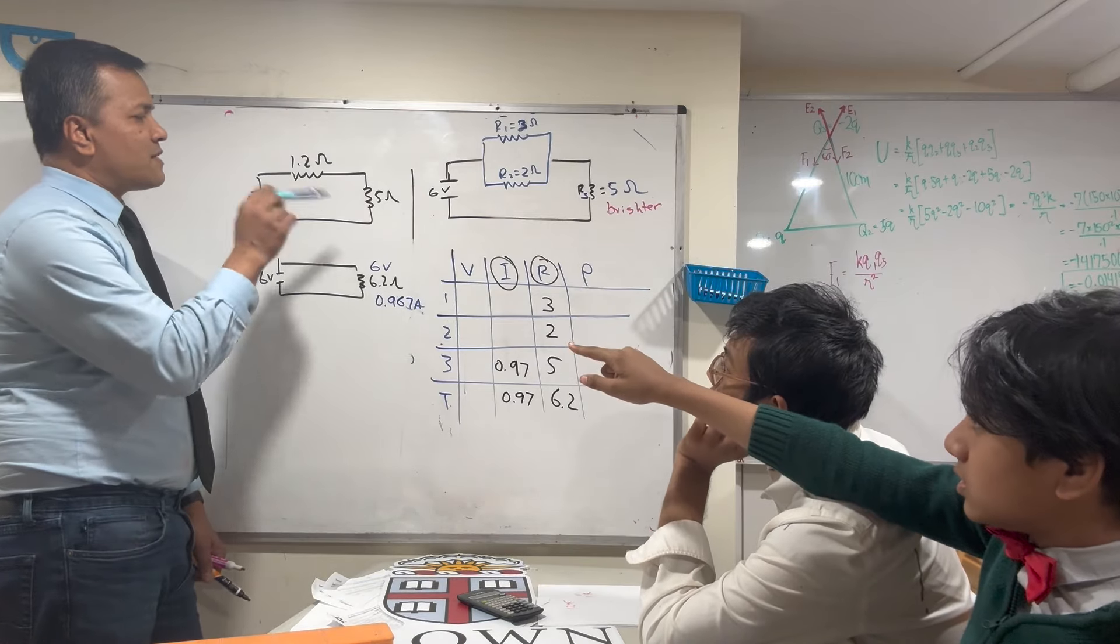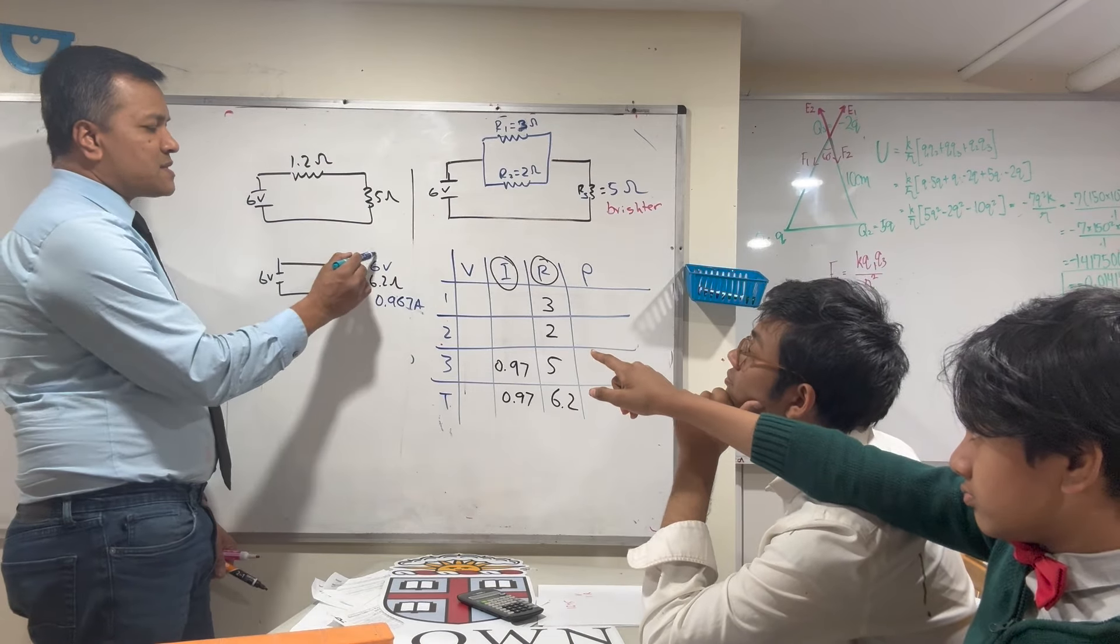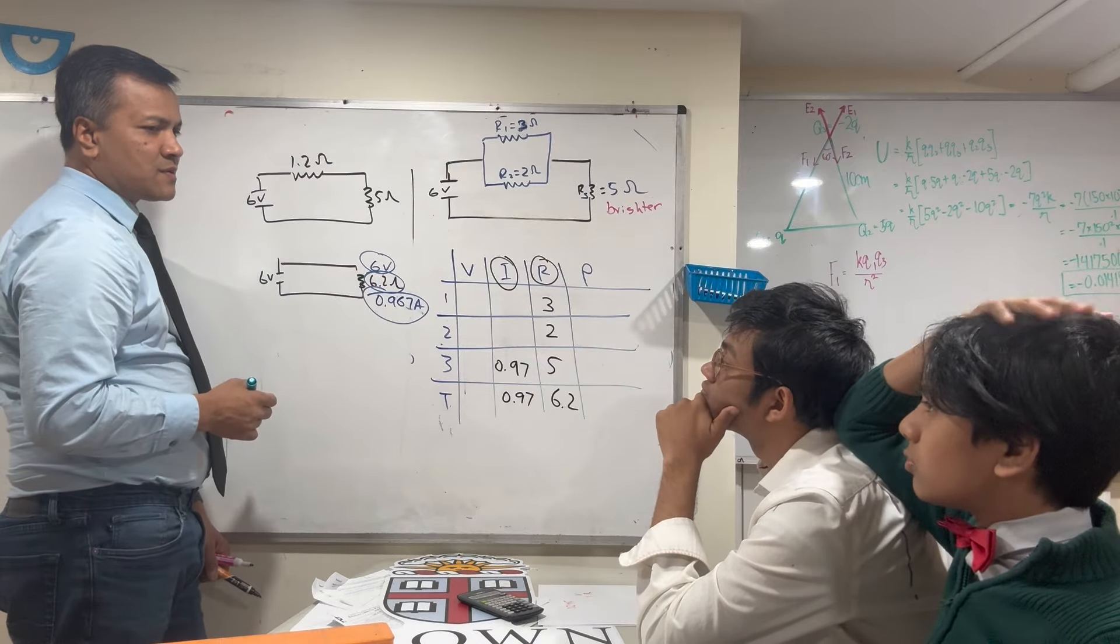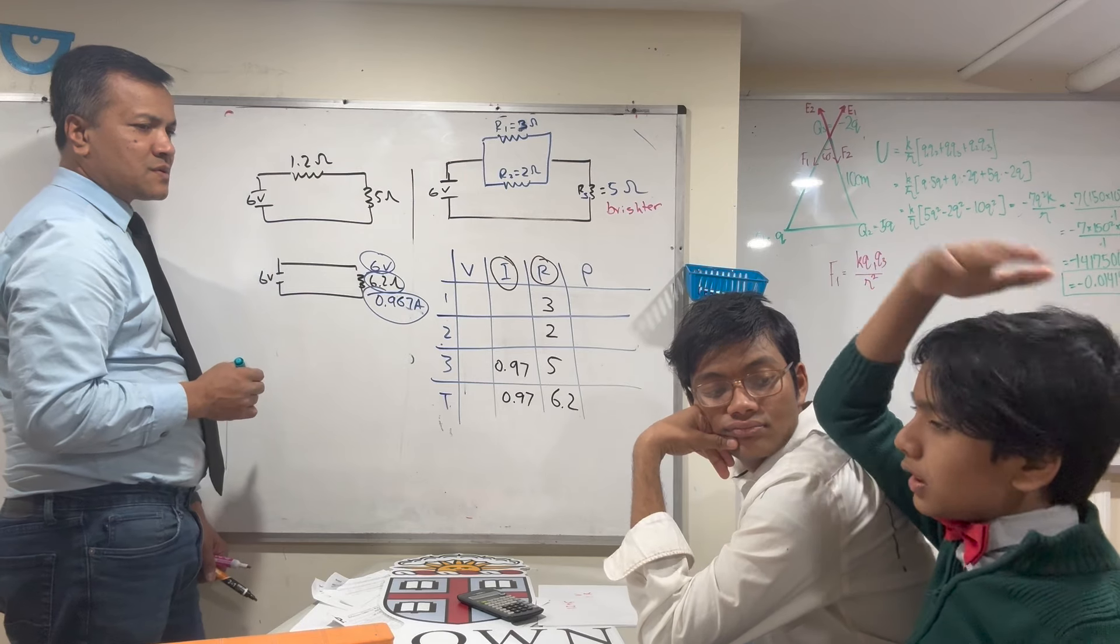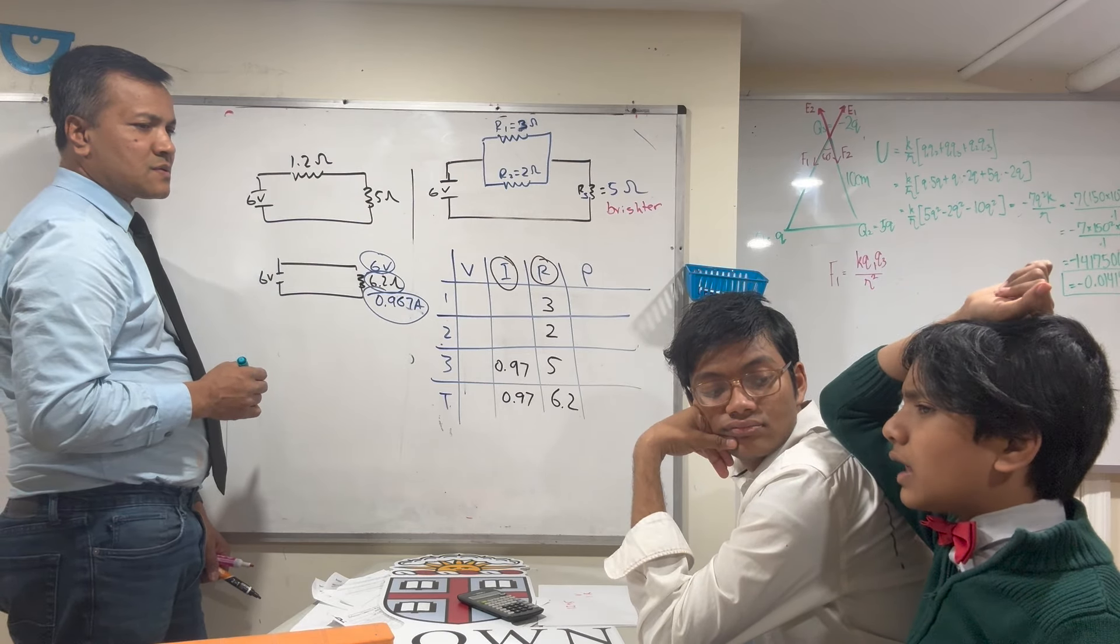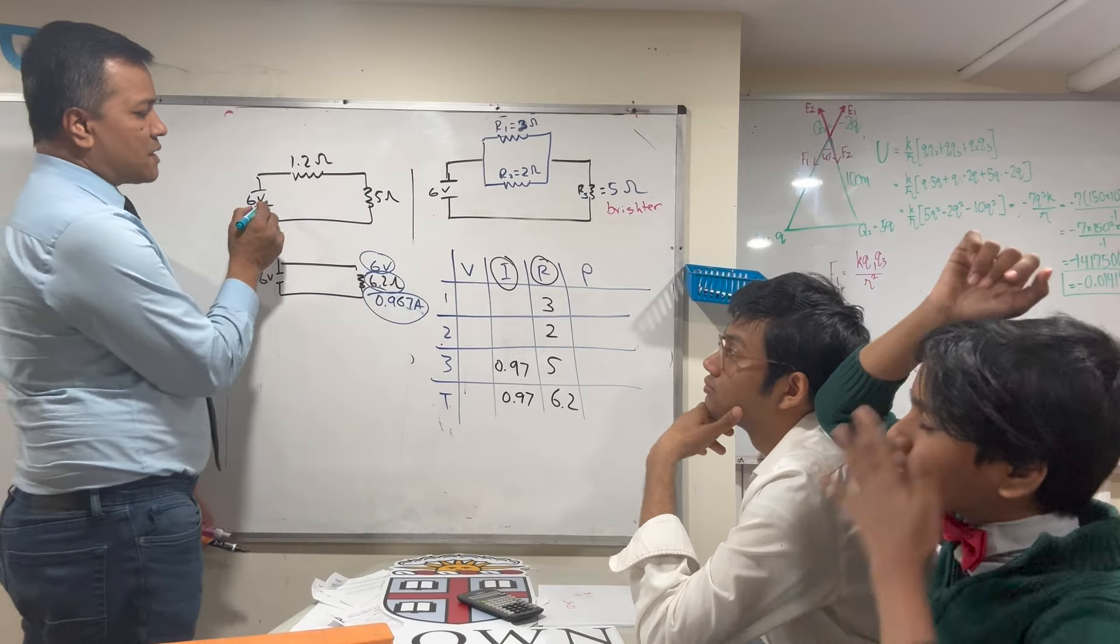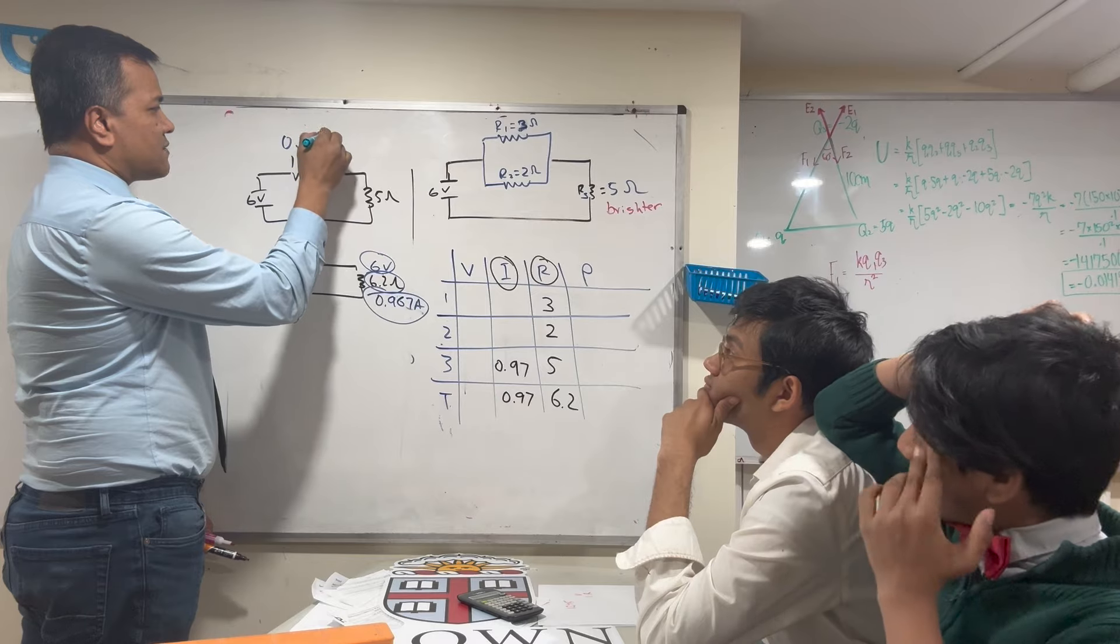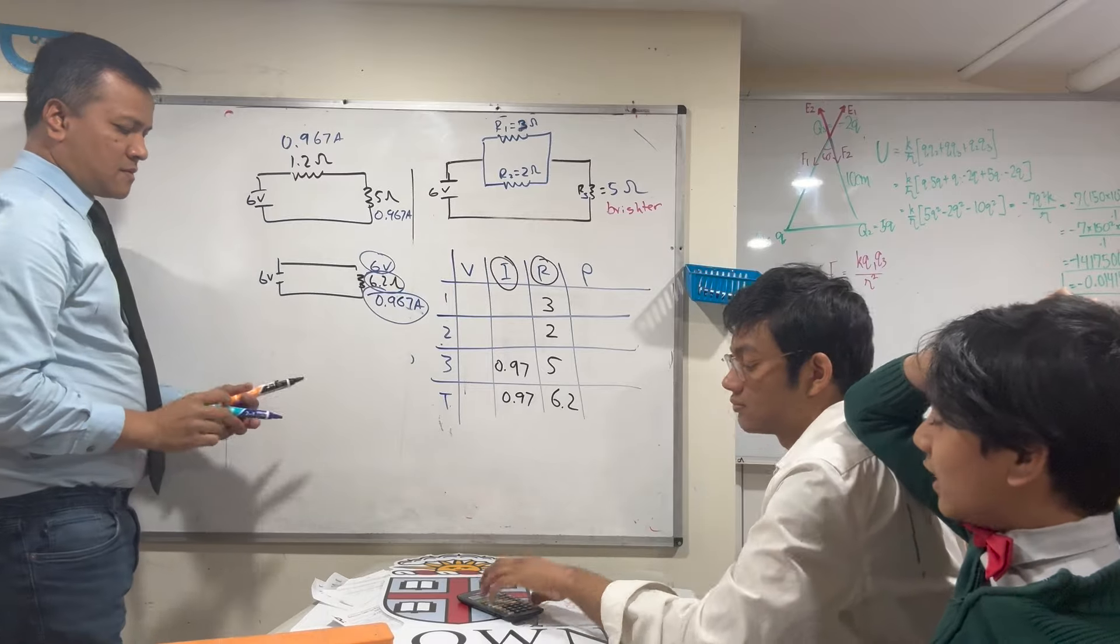Isaac, where does this 6.2 come from? The 6.2 comes from the combination of the 5 and 1.2. Are 5 and 1.2 in series or parallel? Series. Since it is series, which information can you use? The current is going to be the same, so we're gonna write 0.967 amps.